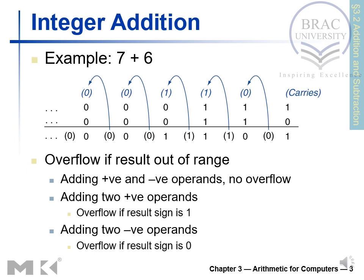For integer addition, take the example 7 plus 6 — both are integers, so the result is 13, which is also an integer. This addition is decimal addition, and the equivalent binary addition is shown in the diagram, giving the same result of 13.